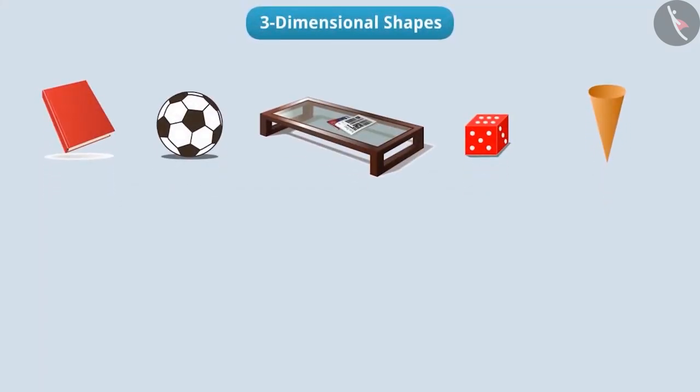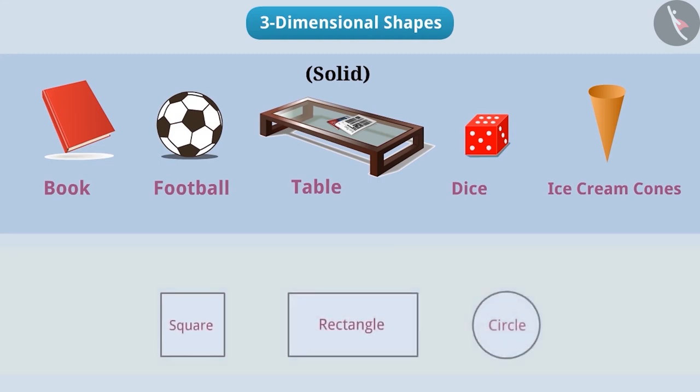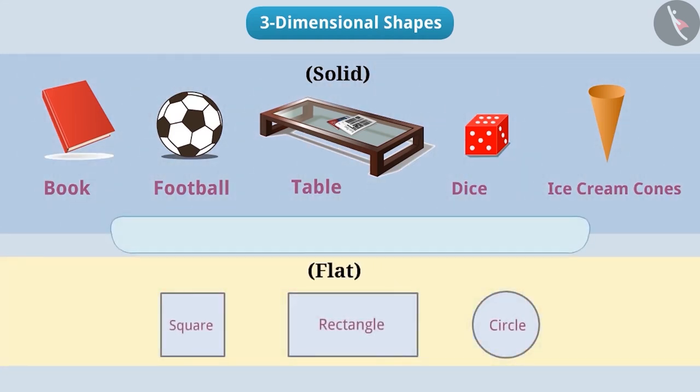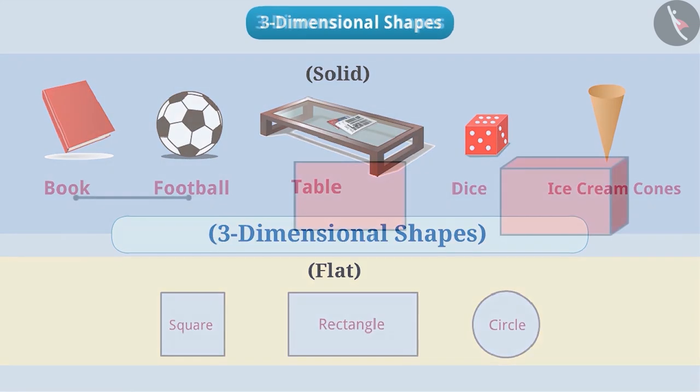In our daily lives we see different things, such as books, football, tables, dice, ice cream cones, etc. All these shapes are solid. These shapes are not flat like rectangles, circles, etc. We call them three-dimensional shapes. Let's understand them.